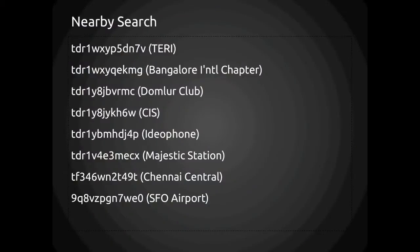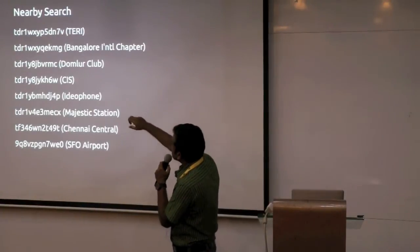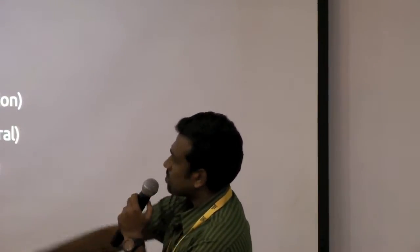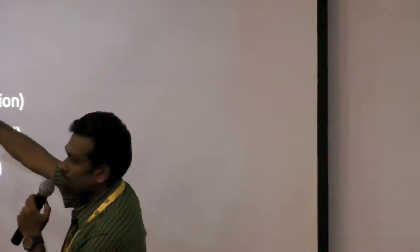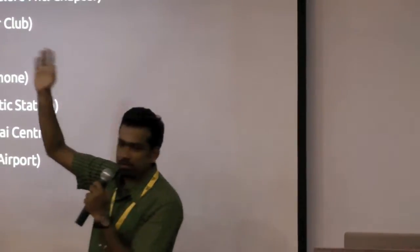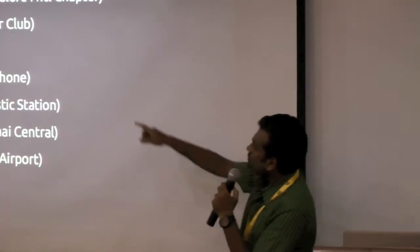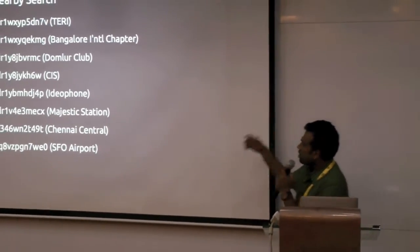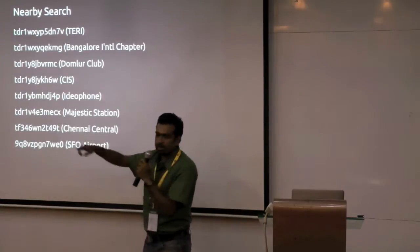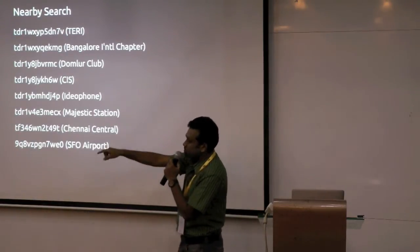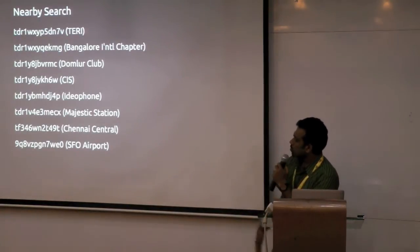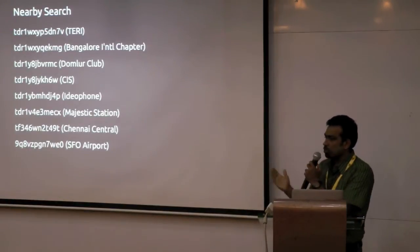Just to understand the coding part — TDR1W is common for areas like Teri and Bangalore International Airport. CIS, which is pretty close, has a different bucket. Our office on Indiranagar 80-feet road and CIS share initial characters. If I didn't even know where Majestic is, I can still figure out it starts with TDR1W — so it's Bangalore. Chennai only shares the starting point in common with Bangalore. Something on the opposite side of the globe has a totally different code, like SFOI.